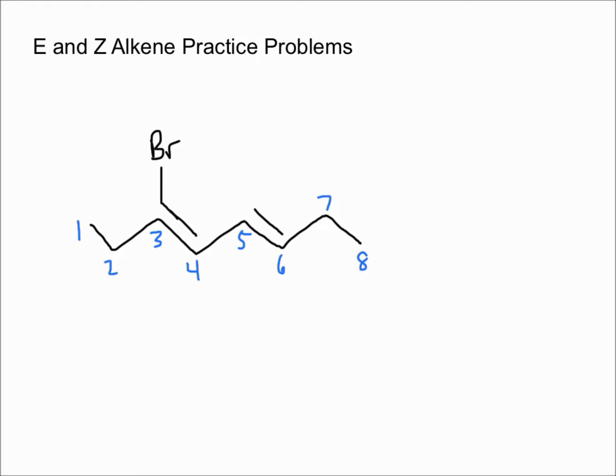Same thing, higher priority is bromine—bromine has a higher atomic number than carbon. Here it might help if you draw in that extra hydrogen. If you compare a hydrogen to a carbon, the carbon is going to get the higher priority. Since the highest priority groups are on the same side, this alkene would be a Z alkene.